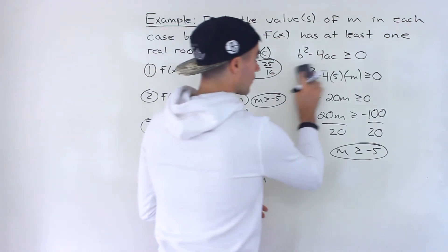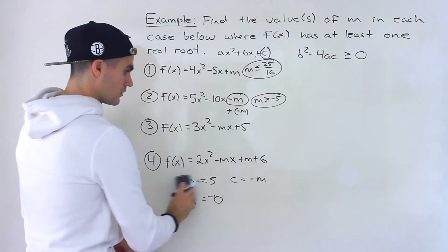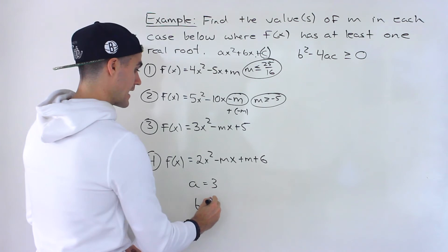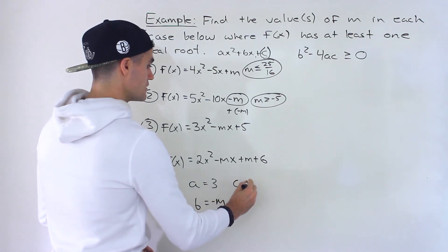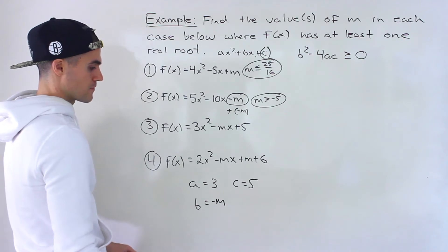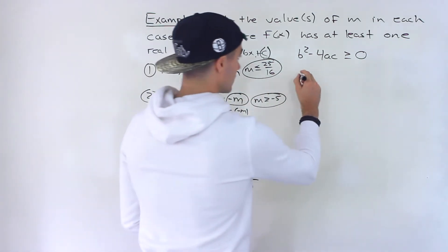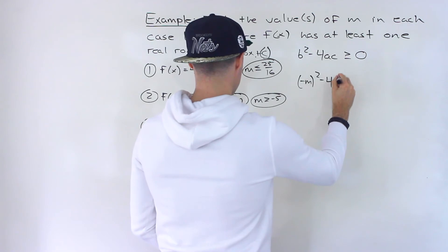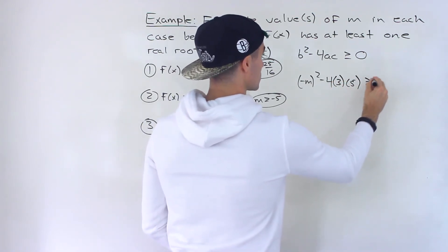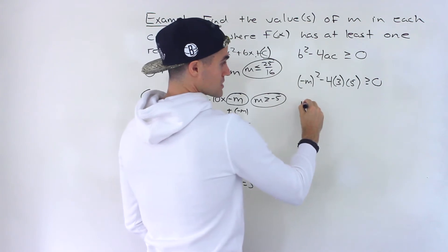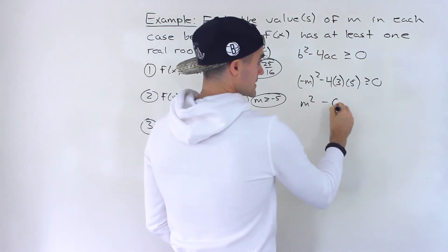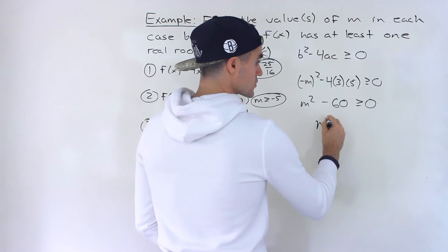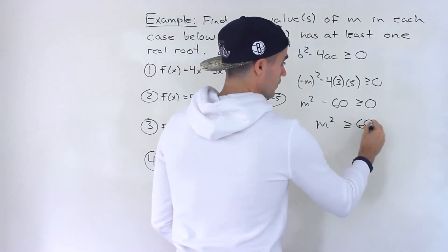Problems 3 and 4 are going to be a little more tricky. For number 3, the a value is 3, the b value is negative m, and the c value is positive 5. Plugging in, we'd have negative m squared minus 4 times 3 times 5 greater than or equal to zero. Negative m to the power 2 is just m squared, and 4 times 3 times 5 is 60, so we get m squared minus 60 greater than or equal to zero.